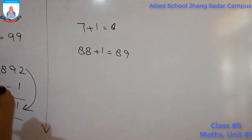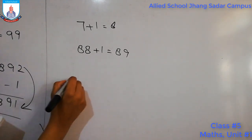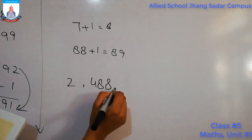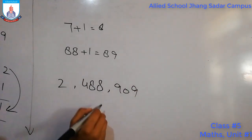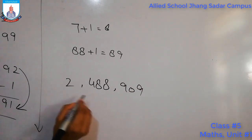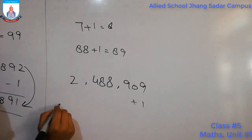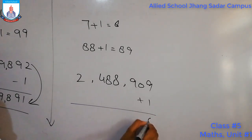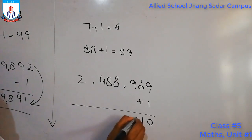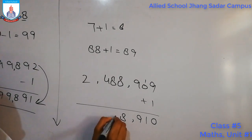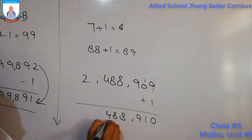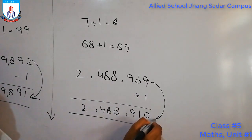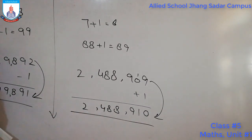Similarly, when we have a larger number, suppose we have a number ending in 9 and we have to find its successor, we will add 1. For example, 9 plus 1 is 10, so 1 will be carried and the resulting number is saved. This result is the successor of the previous number.